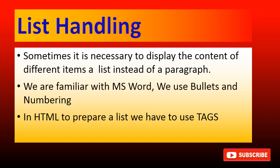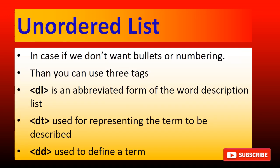In HTML — web pages prepared using different tags — we get the facility of preparing both kinds of lists: ordered list (numbering) and unordered list (bullets). In an unordered list, each list item starts with a symbol like a bullet. To create an unordered list we use the UL tag, and each list item is displayed using a tag called LI.